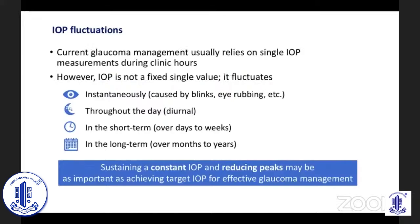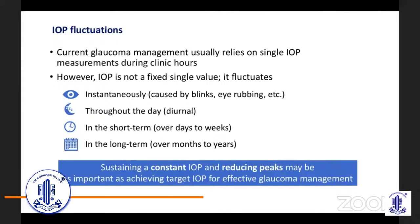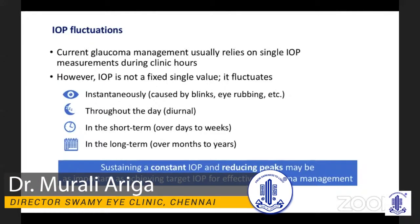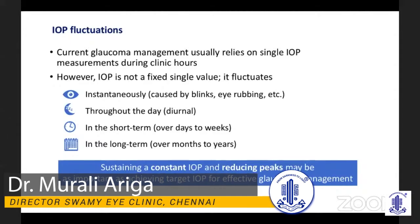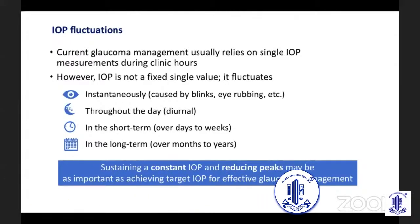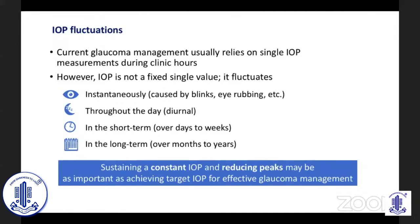We all know that currently our glaucoma management sometimes depends on just a single IOP measurement, or what we call spot measurements or a snapshot measurement of the intraocular pressure during clinic hours. But IOP is not just a fixed single value. It actually fluctuates with blinks, eye rubbing, through 24 hours as diurnal fluctuation, in the short term over days and weeks, and of course over the long term. So sustaining a constant IOP and reducing the peaks of fluctuations may be as important as achieving a target intraocular pressure for effective management of glaucoma.